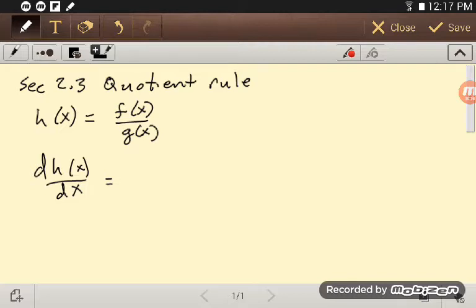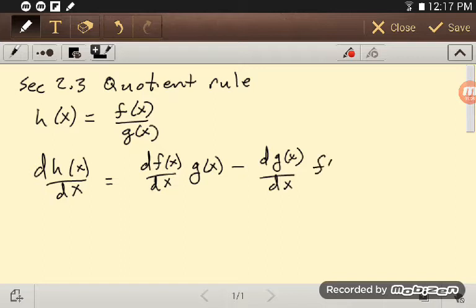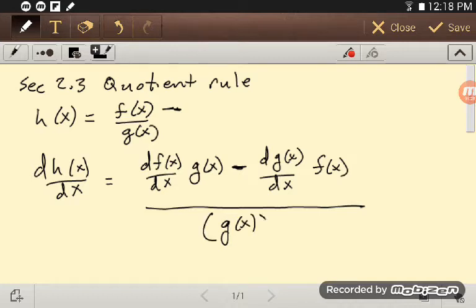It is the top, so I take the derivative of the top first. So I have derivative of f(x) with respect to x times g(x), the bottom, minus the derivative of the bottom, so g(x) with respect to x times our function f(x). So it looks similar to the product rule, but it absolutely matters that the top function gets the derivative first, and the negative goes on the derivative of the bottom, but then divided by g(x) squared.